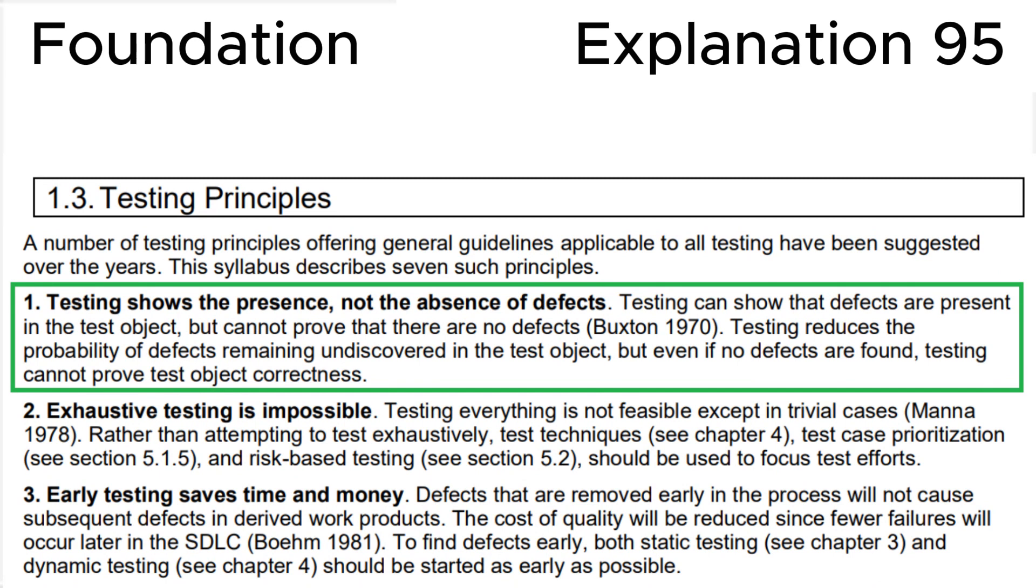Testing can show that defects are present in the test object, but cannot prove that there are no defects. Testing reduces the probability of defects remaining undiscovered in the test object. But even if no defects are found, testing cannot prove test object correctness.